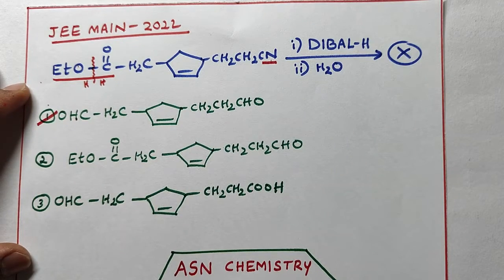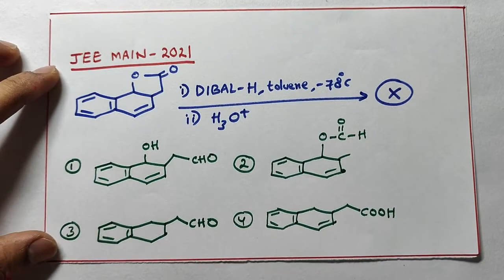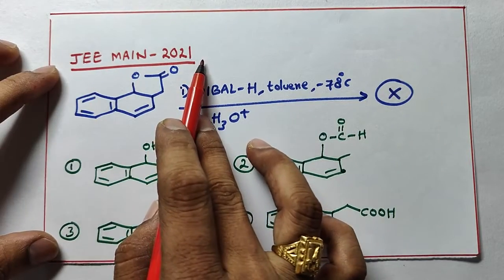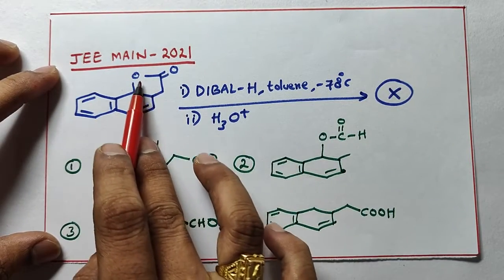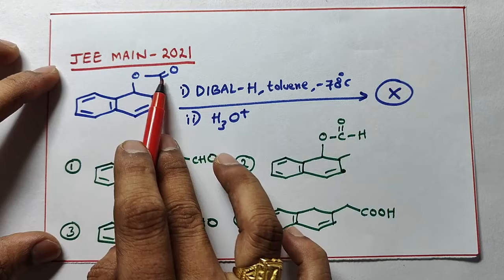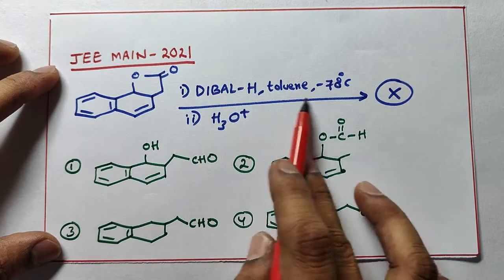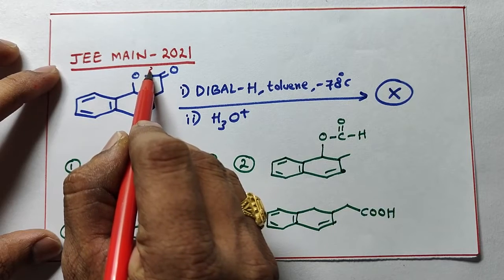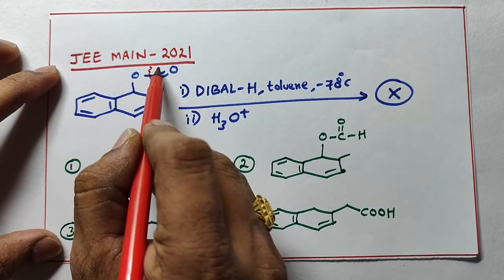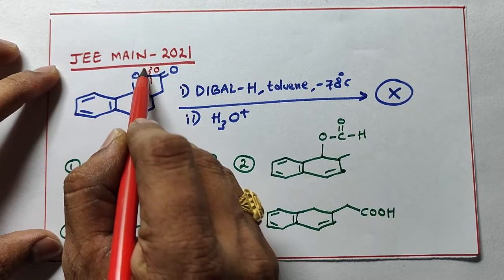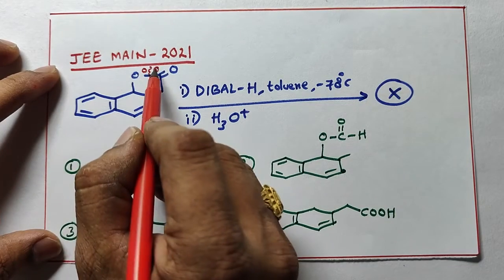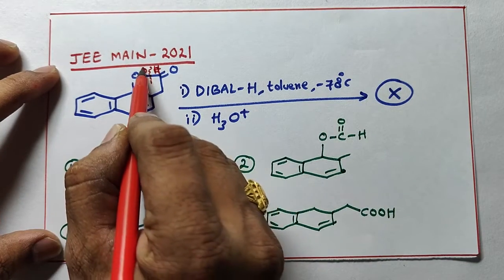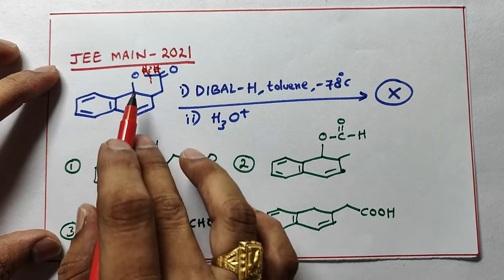JEE main 2021 question. Here ester functional group is there, cyclic ester. Now lactone is there in presence of DIBAL-H. So here what happens, same way break this bond, and right hand side hydrogen, left hand side hydrogen you can write it.